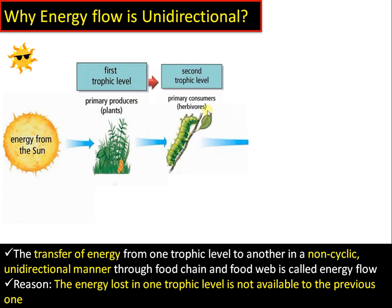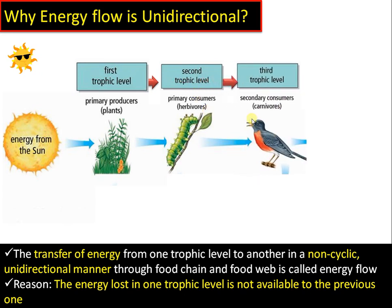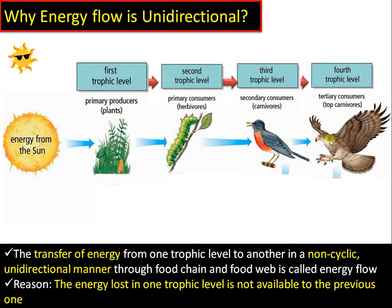The first trophic level is eaten by herbivores, which constitute primary consumers or the second trophic level. That is further taken up by secondary consumers or carnivores, forming the third trophic level, and finally eaten by top carnivores, which constitute the fourth trophic level. Therefore, energy flow is simply the transfer of energy from one trophic level to another in a non-cyclic, unidirectional manner through a food chain or food web.